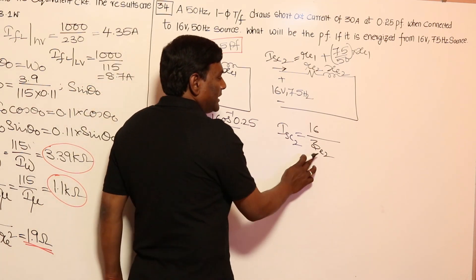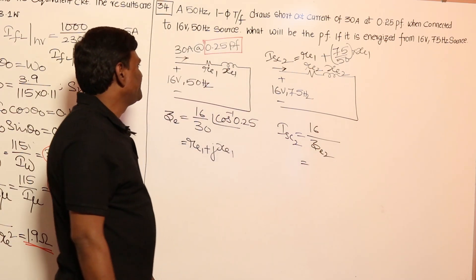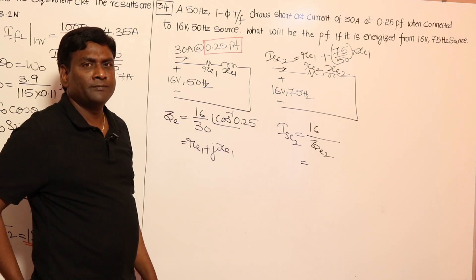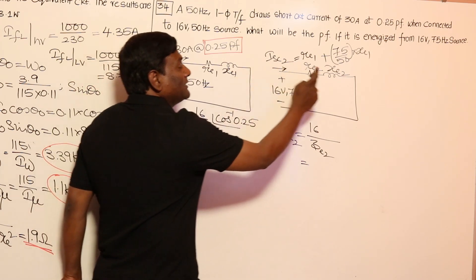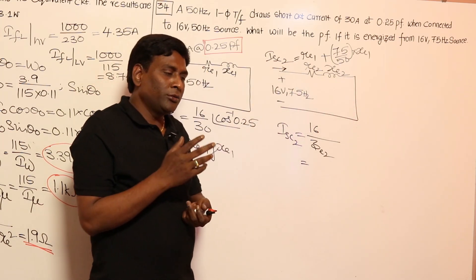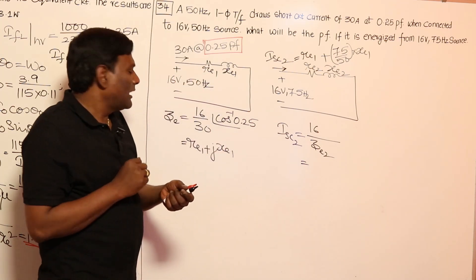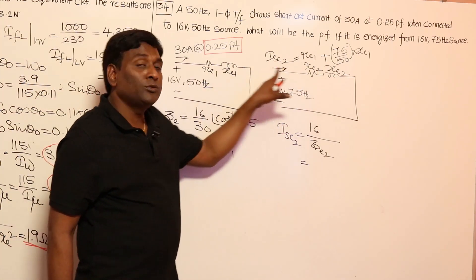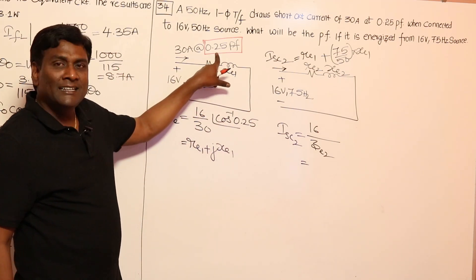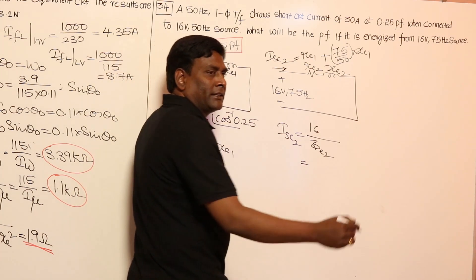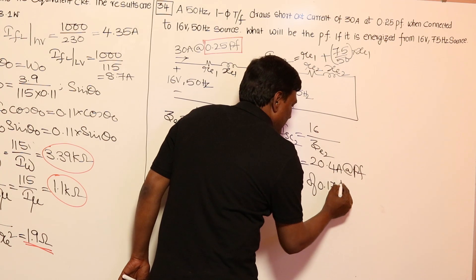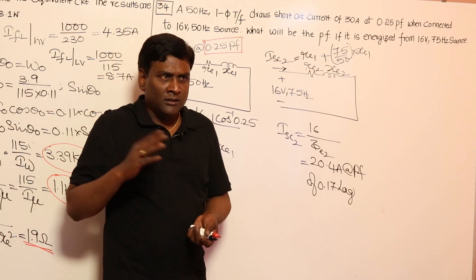Calculating ISC2 = 16 / |ZE2|, we get ISC2 = 20.4 amperes and a power factor of 0.17 lagging. This confirms both expectations: current is reduced from 30 A to 20.4 A, and power factor is reduced from 0.25 to 0.17 lag, because reactance increased while resistance remained the same. That is how we solve this problem.